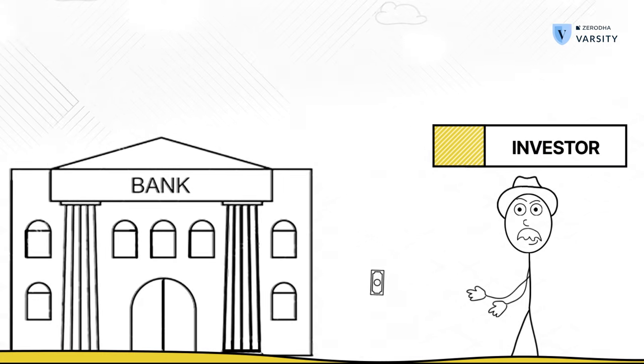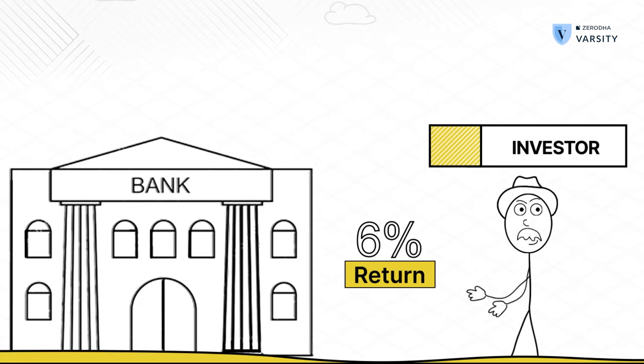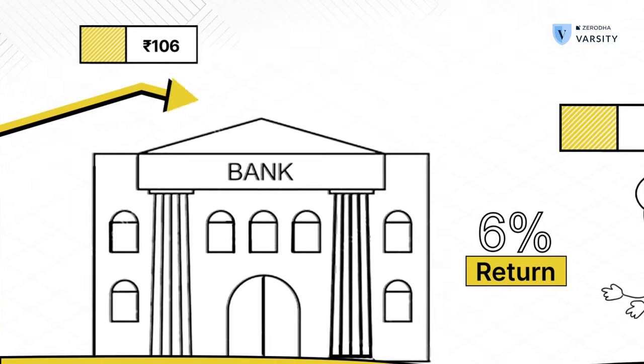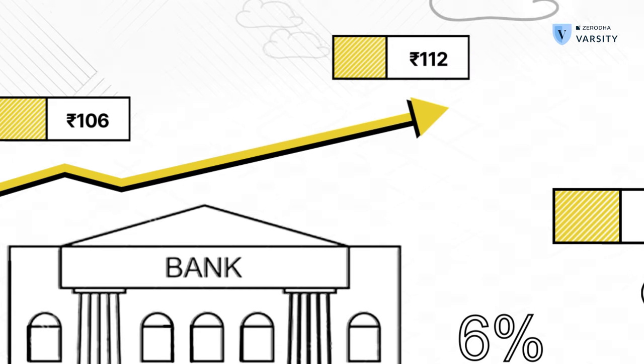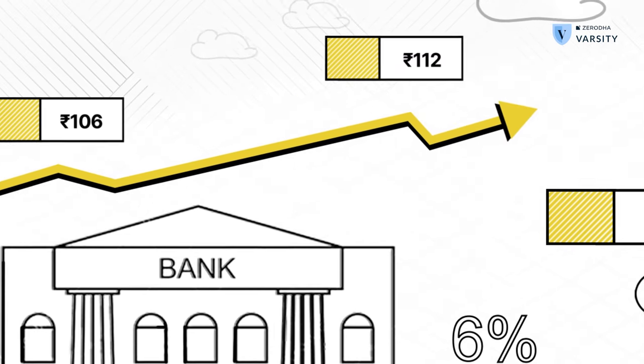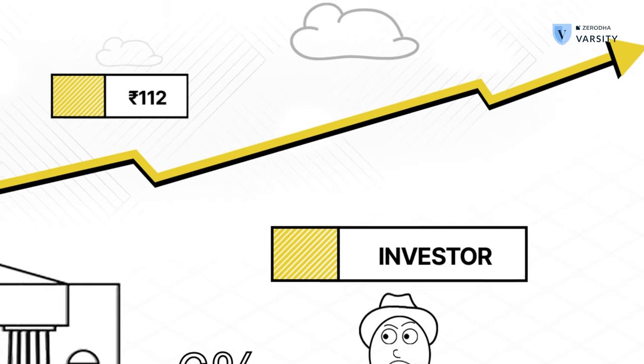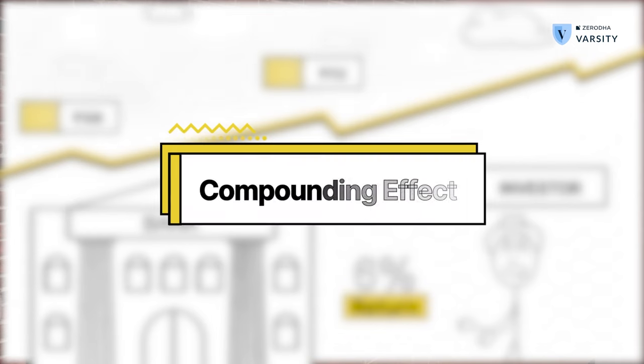Lastly, don't expect compounding of your investment to work the way it would in the fixed deposit market. In the fixed deposit market, compounding works very well without any volatility. For example, assume that you invest Rs.100 in a fixed deposit scheme of a bank which offers you 6% return. At the end of one year, your Rs.100 becomes Rs.106. At the end of the second year, your Rs.106 becomes Rs.112. If you keep this investment on for a 10-year period, what you will experience is a nice upward sloping curve — people refer to this as the compounding effect.